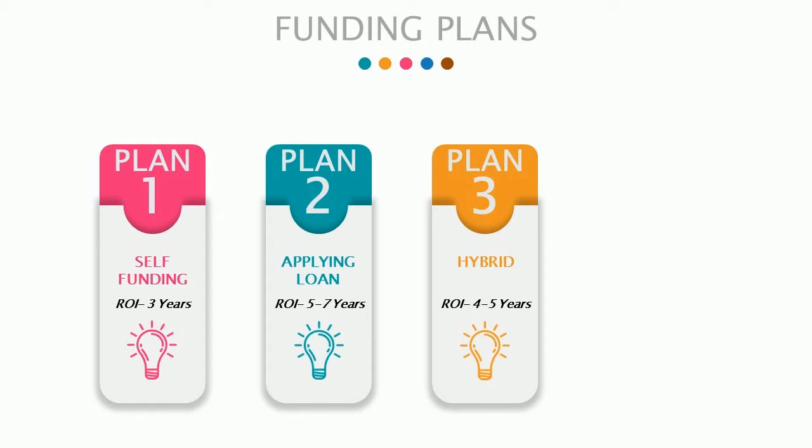Now you might have questions as to how to set up the plant and what are the benefits. Firstly, there are 3 ways in which the project can be funded. The revenue generated by solar is around 7 to 8 lakh, so if you invest 25 lakhs the return on investment is around 3 to 4 years. The life of a solar plant is 25 years, meaning you are generating free electricity for 20 years.